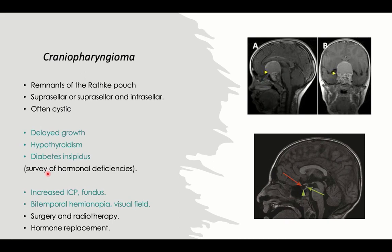A survey of hormonal deficiencies should be done: measure ACTH, TSH, gonadotrophins, FSH, LH, growth hormone, and antidiuretic hormone based on the clinical setting. Fundus examination will show papilledema and optic nerve changes due to pressure on the optic chiasm, and characteristically the visual field will show bitemporal hemianopia — the characteristic visual field defect associated with craniopharyngioma due to optic chiasm compression.